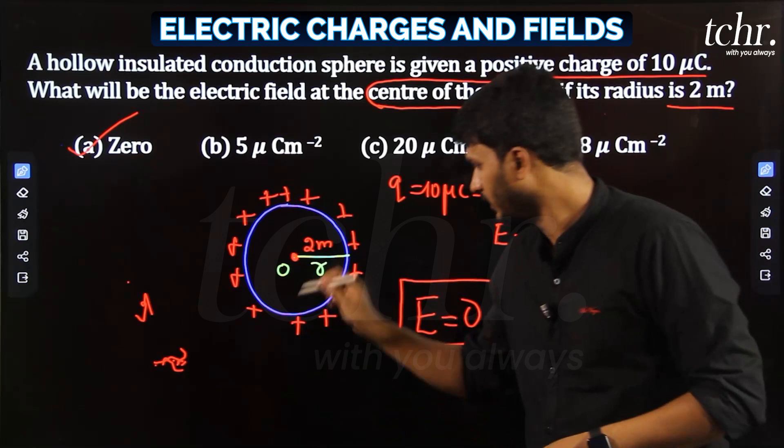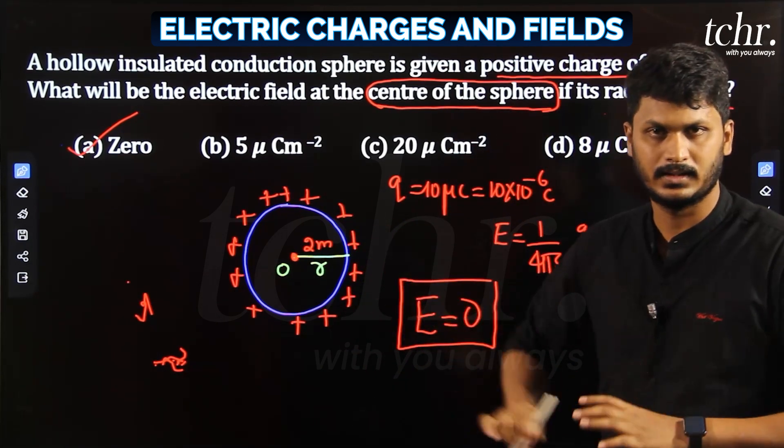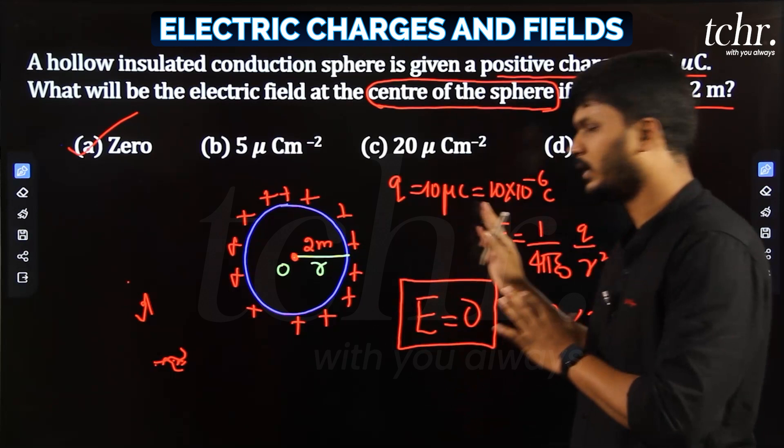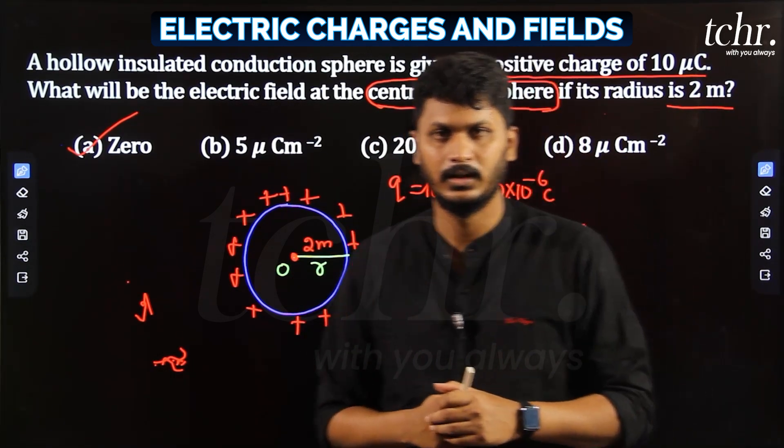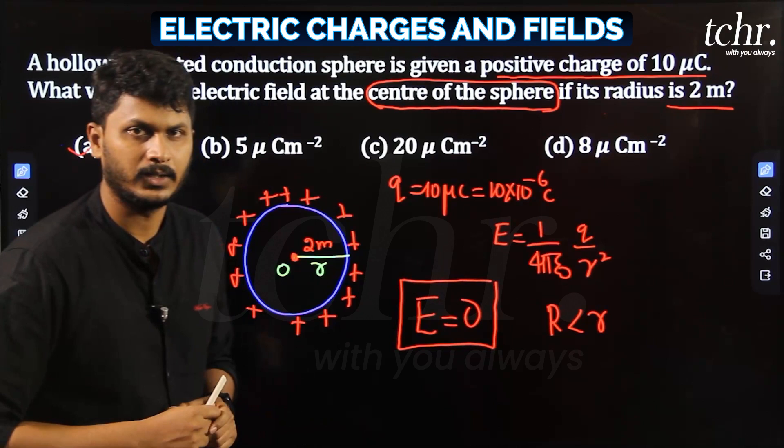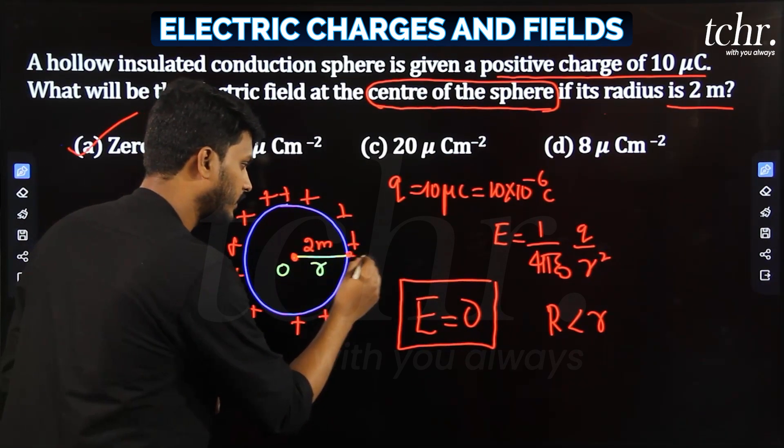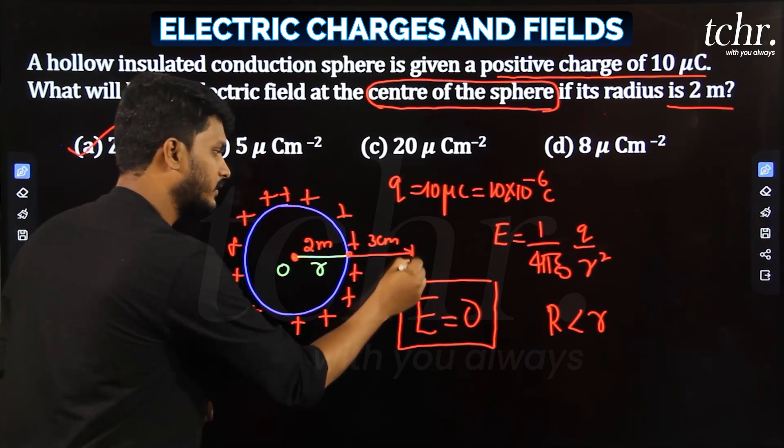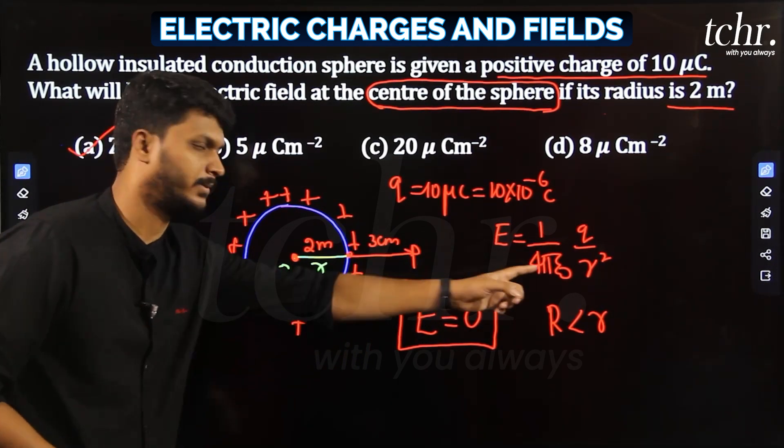Second thing: on the shell, you can use the radius as it is. What if it's an outside point? Remember, measure from the center. Don't get confused - if it says at a distance 3 centimeters from the sphere, that's a common mistake.